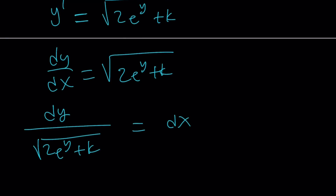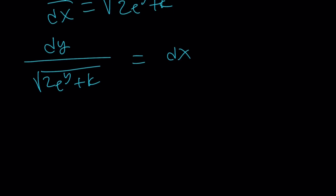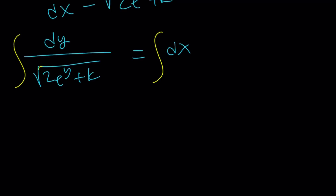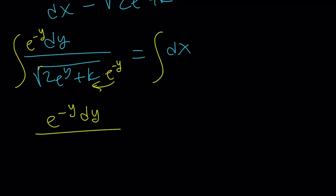We can separate the y and x variables and then integrate both sides — this is the fun part. When you integrate dx, that's easy: it's going to be x plus c. But what about that square root at the bottom? We can multiply numerator and denominator by e to the power negative y, so e to the negative y goes inside the square root and becomes e to the power negative 2y, giving us the square root of 2e to the power negative y plus k times e to the power negative y.